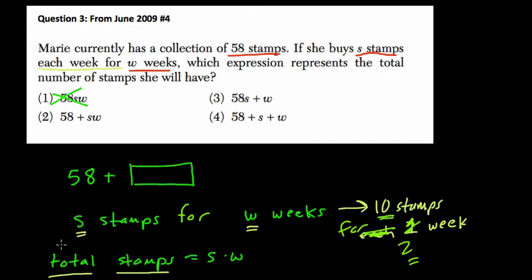And then, what's our last step, Tim? Now, we know total stamps equals S times W. Well, we know how many stamps she's buying, which is S times W. And we know how many she started out with. So it's just adding them. 58 plus S times W. Okay. So I think our choice there is number two.